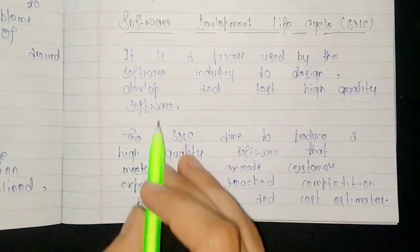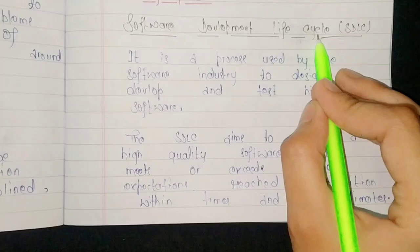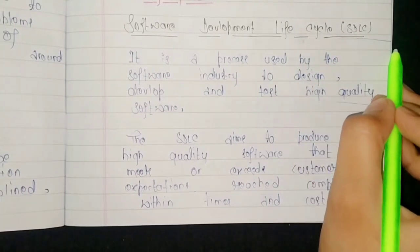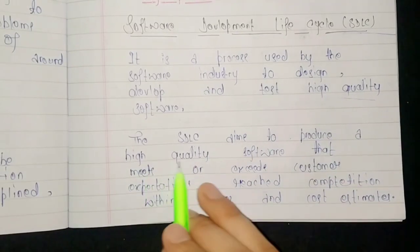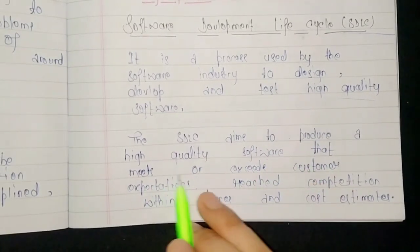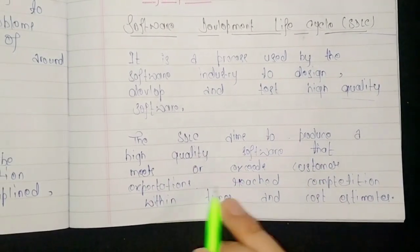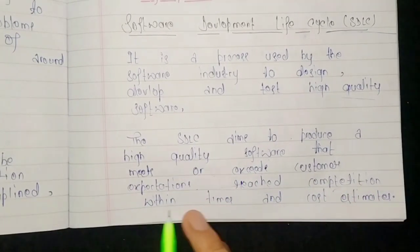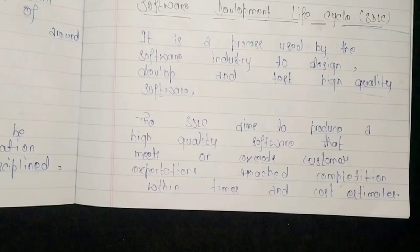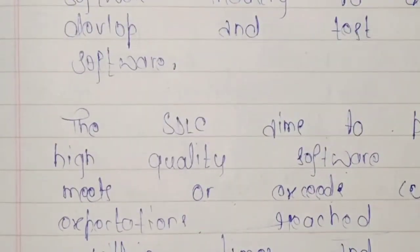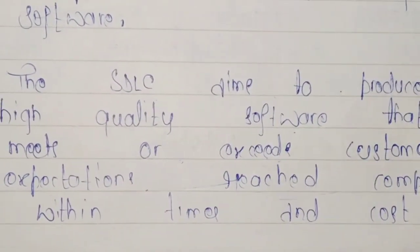The SDLC is a software development life cycle. The SDLC aims to produce high quality software that meets or exceeds customer expectations, reaches completion within time and cost estimates.